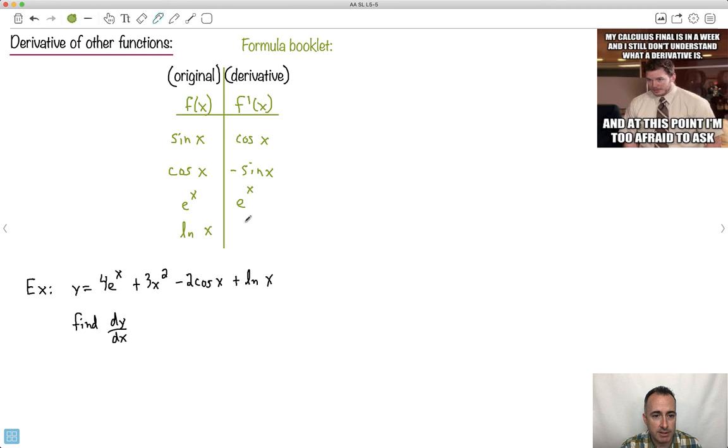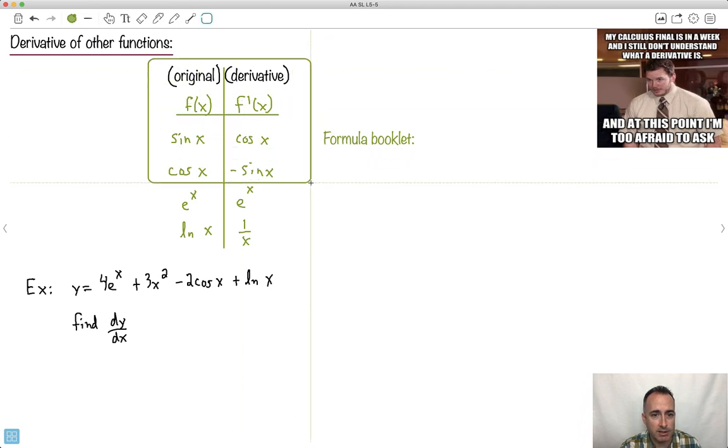And the natural log of x is 1 over x. So these you don't have to memorize. You look them up. And these, luckily, are on your formula booklet. So this is just a simple act of looking them up. And you can figure them out. So for right now, at least, all we'll do is we'll just concentrate on simple versions of these. So let's look at this here. Find dy dx of this big mess.